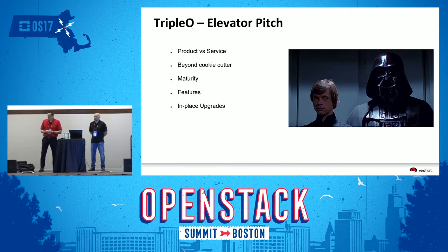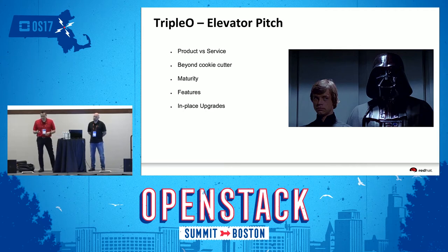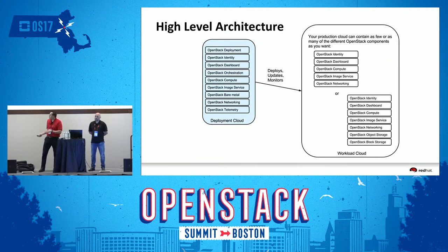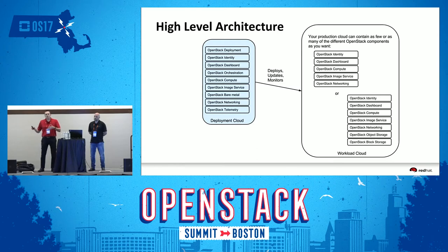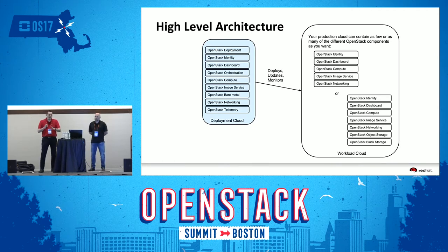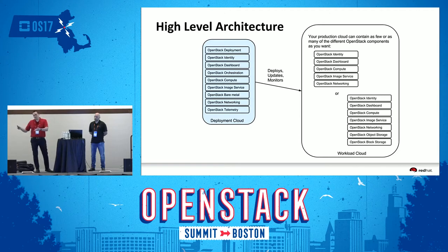As new versions are being released, there are a lot of new features being added, and of course the in-place upgrade, which is the big part of this talk. So what is Triple O? It's deploying OpenStack from OpenStack. Think of it as deploying a single host seed OpenStack — all in one on a single node with all your OpenStack services. That's the undercloud on the left. From there, you deploy your actual production overcloud.